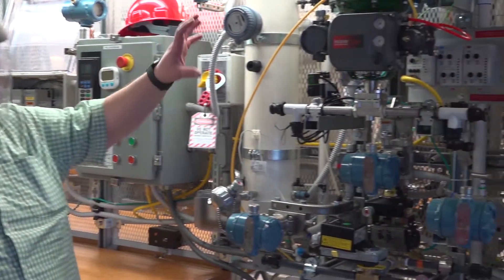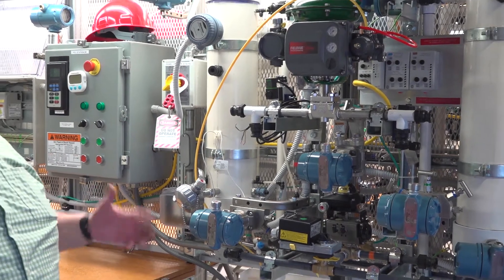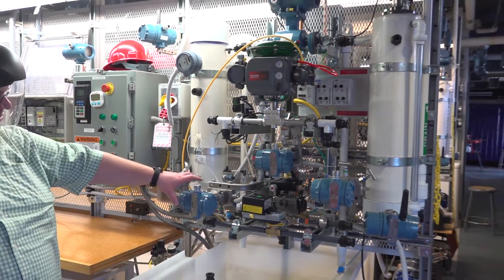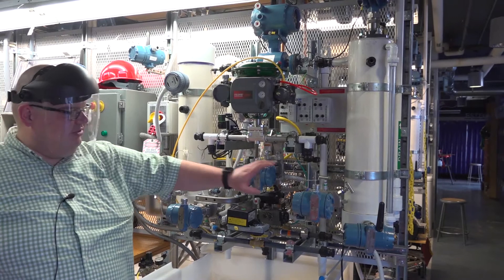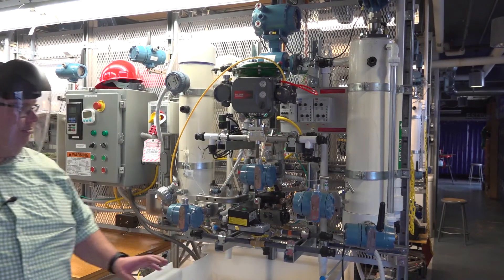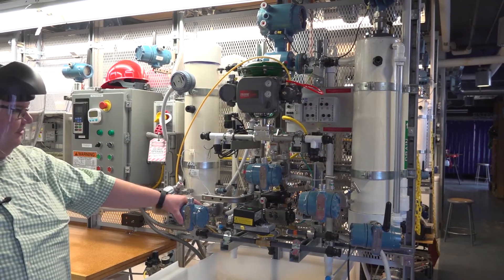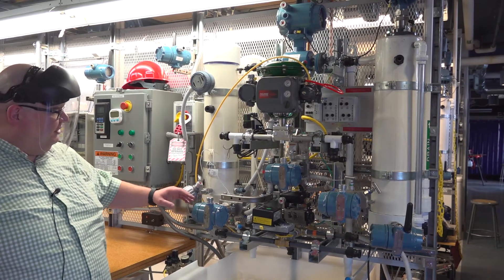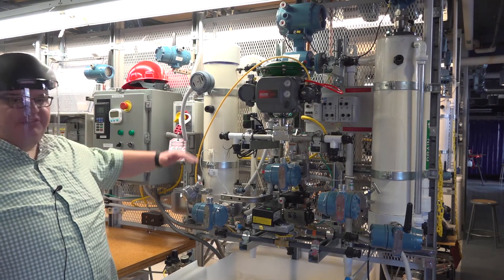Then over here we have our instrumentation. This is where we really focus on in the fourth semester of the program. Each of these blue devices is a transmitter. They're all measuring some parameter in the process. This one, for example, is pressure. It's using pressure to measure how full the tank is.